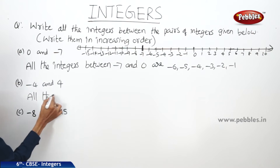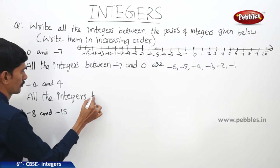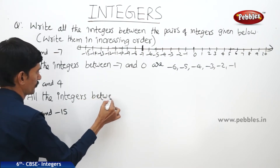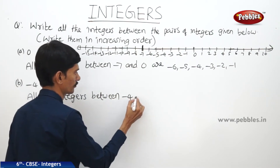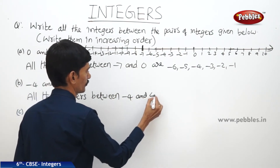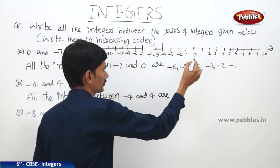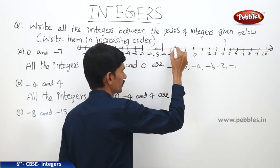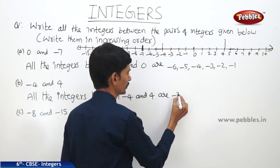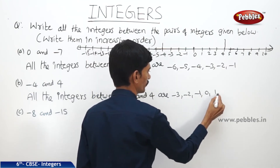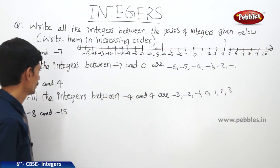Now the integers between minus 4 and 4. Those are minus 3, minus 2, minus 1, 0, 1, 2, 3. So: minus 3, minus 2, minus 1, 0, 1, 2, 3. These are the integers between minus 4 and 4.